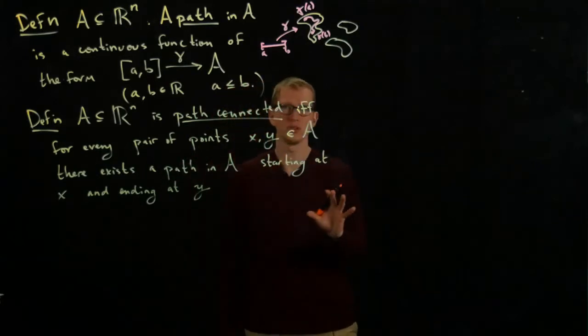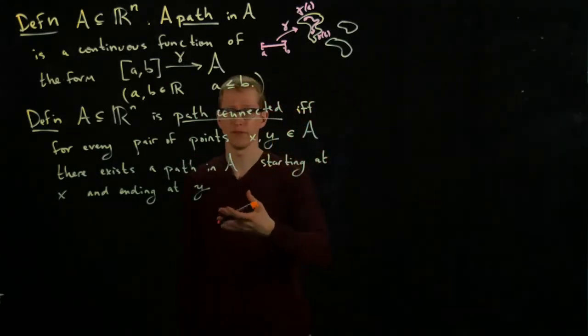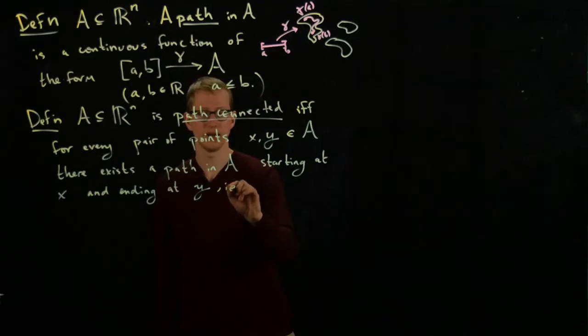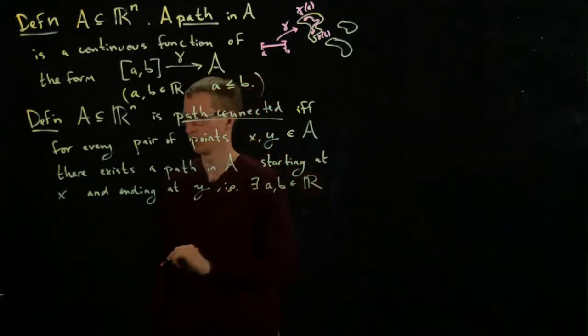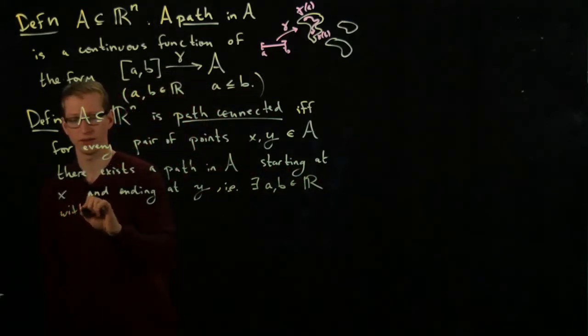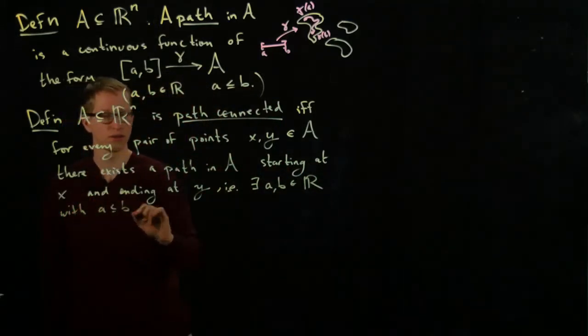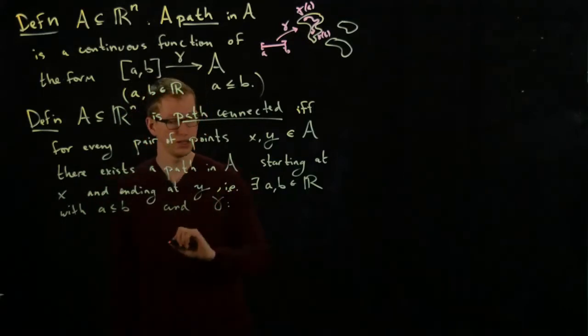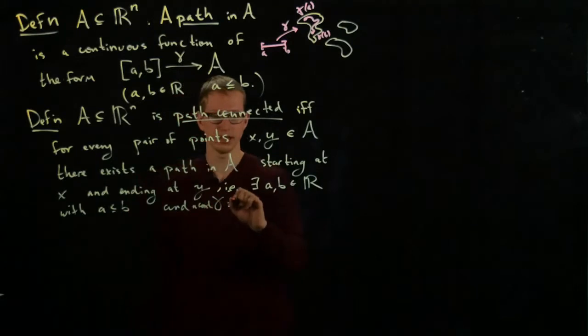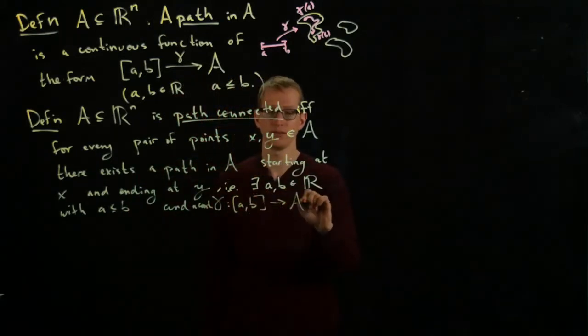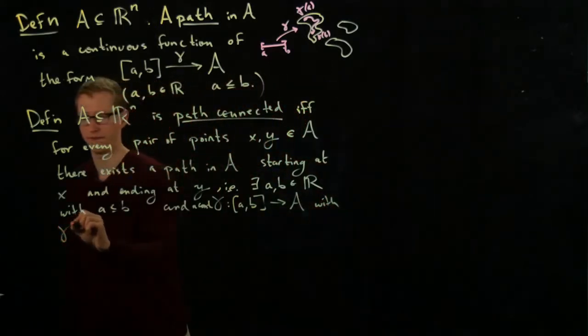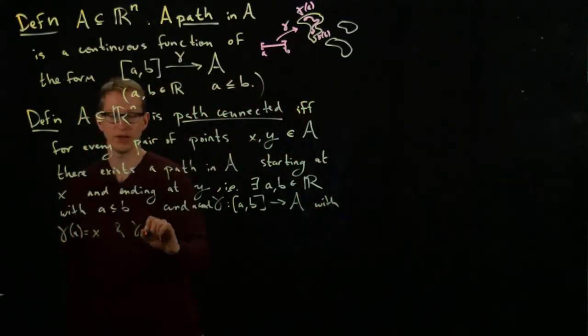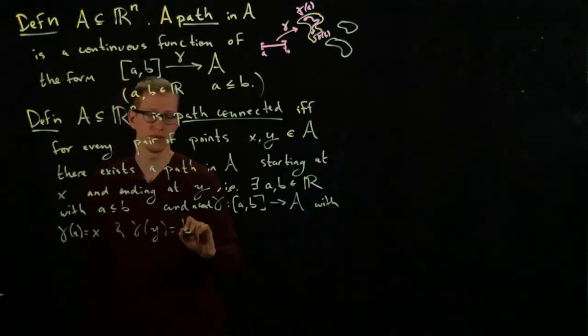Now, I want to be totally clear what this means mathematically in terms of formulas. This would mean: there exists an A and a B in the real numbers with A less than or equal to B, and a continuous function gamma from [A,B] to A, with gamma of A equals x and gamma of B equals y.